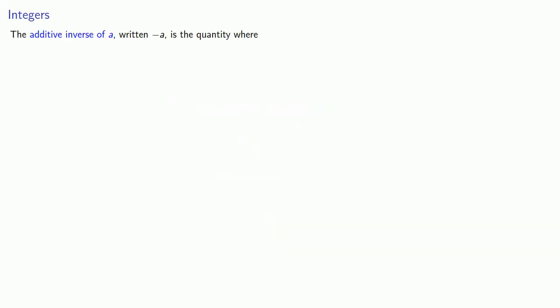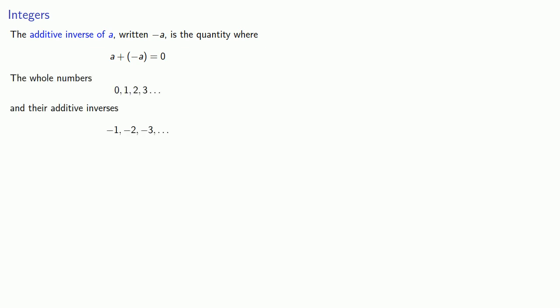The additive inverse of a, written this way, is the quantity where a plus the additive inverse is equal to zero. The whole numbers are zero, one, two, three, and so forth, and their additive inverses form the integers.